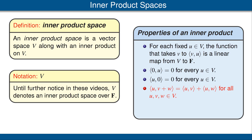Our next property is called additivity in the second slot. This can be proved by using additivity in the first slot, along with the property that interchanging the order gives us the complex conjugate. Our last property states that if we have a scalar multiple of a vector in the second slot, then the scalar comes out multiplied by a complex conjugate. Notice that in the case where the scalar field is real, this last property says that ⟨u, λv⟩ equals λ times ⟨u, v⟩ — in other words, we have linearity in the second slot only in the case of a real vector space. You should pause the video for a moment to verify all five of the bullet points listed here.